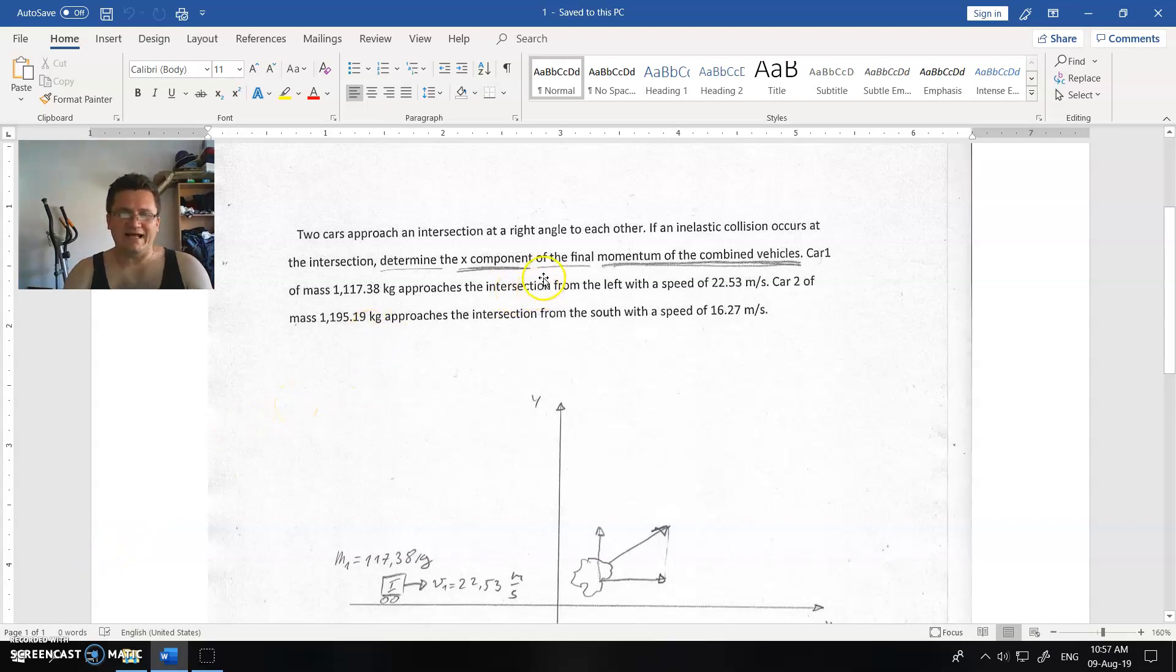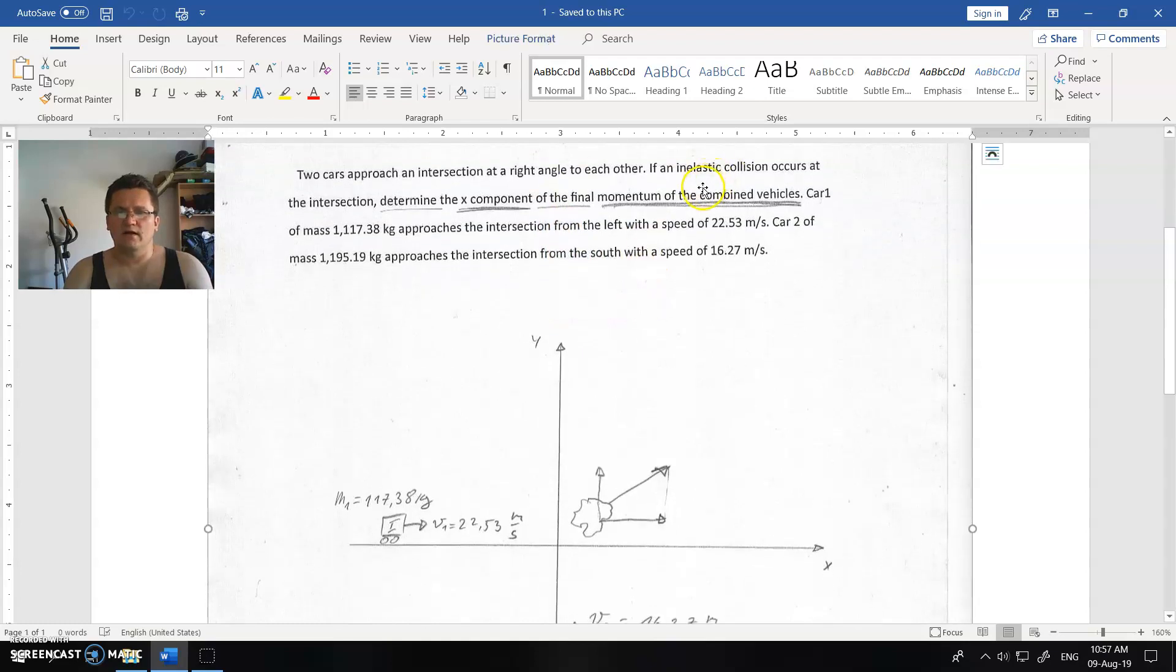Two cars approaching an intersection at right angles to each other. If an inelastic collision occurs at the intersection, determine the x-component of the final momentum. Define final momentum for car one and car two.